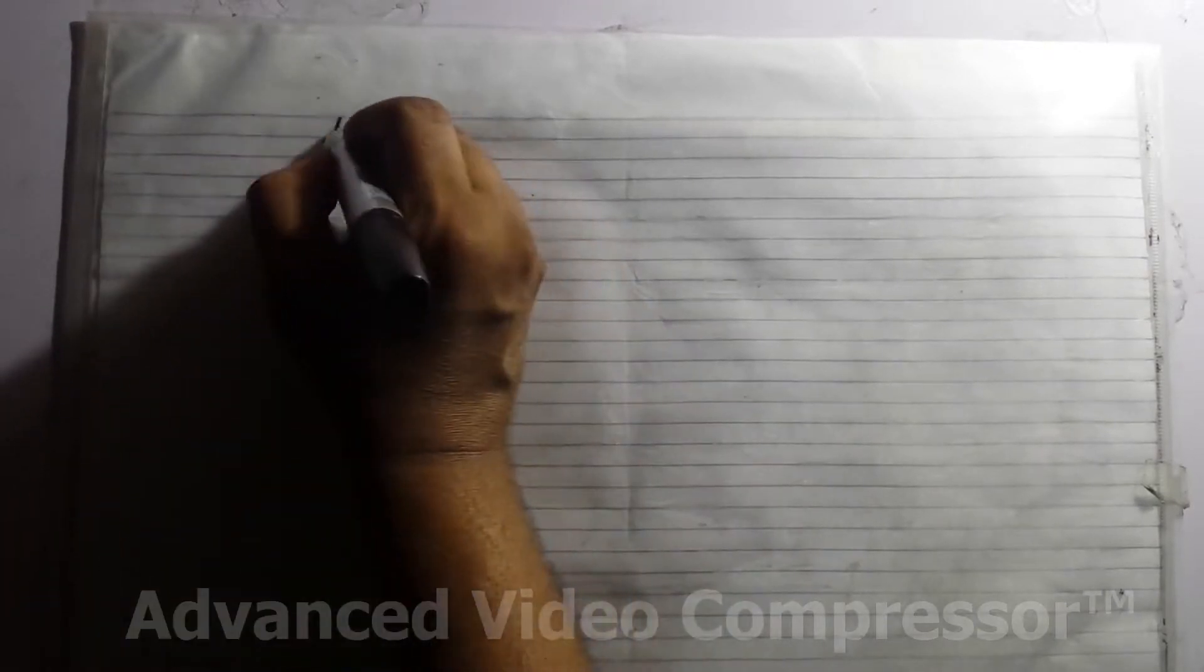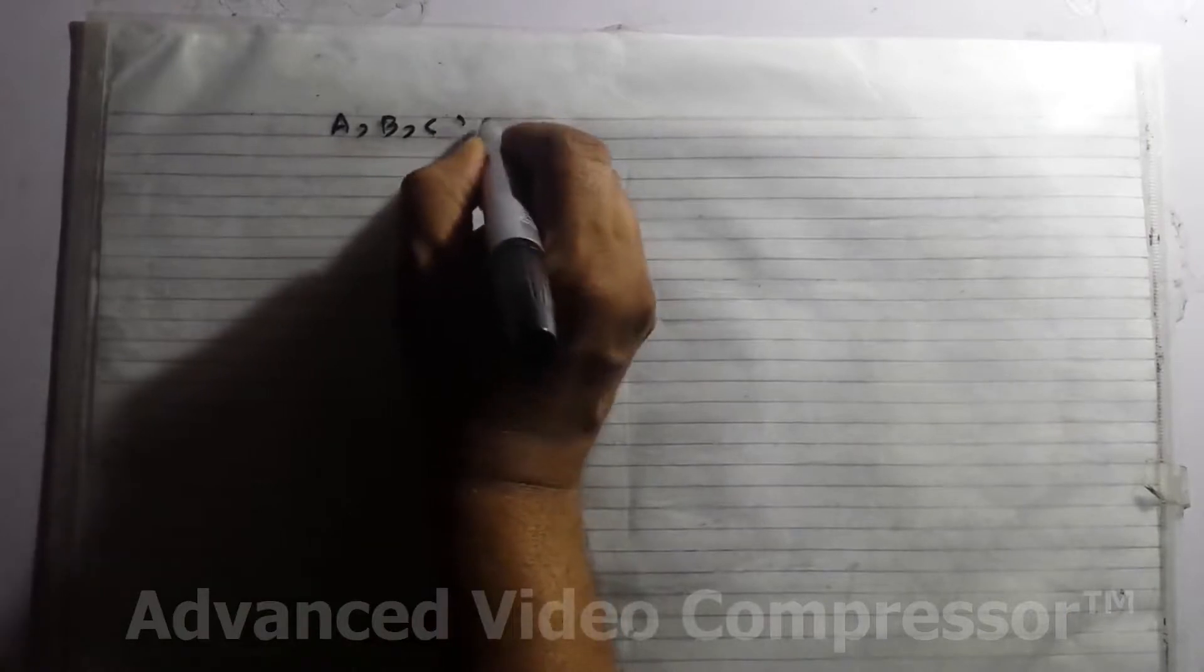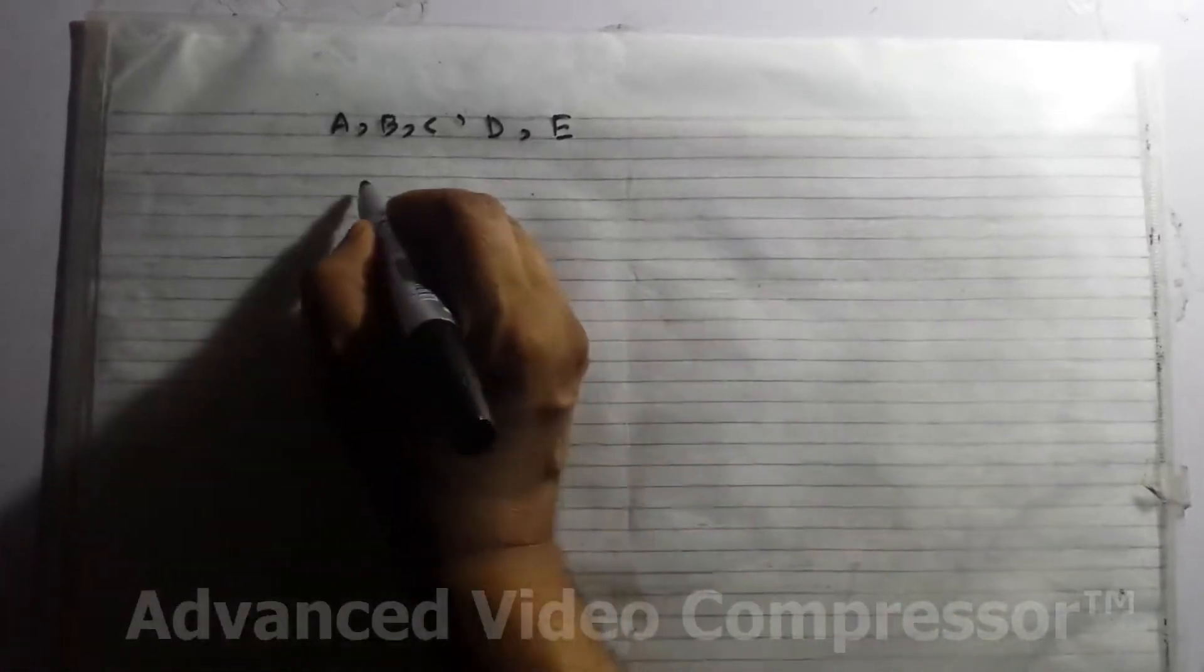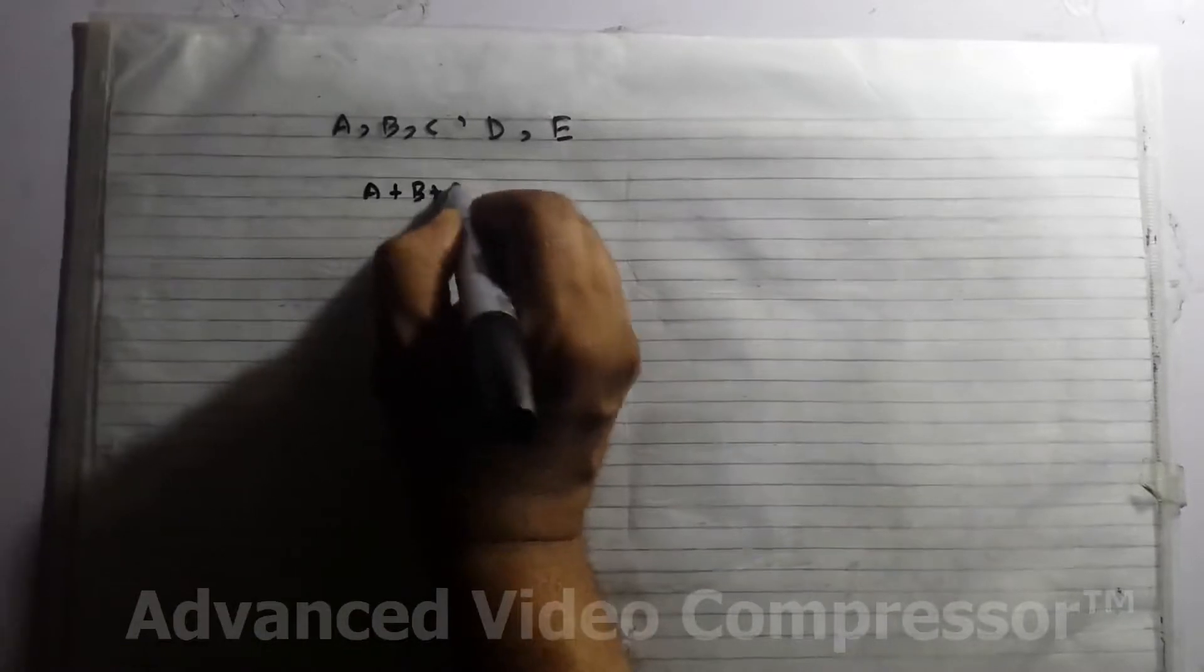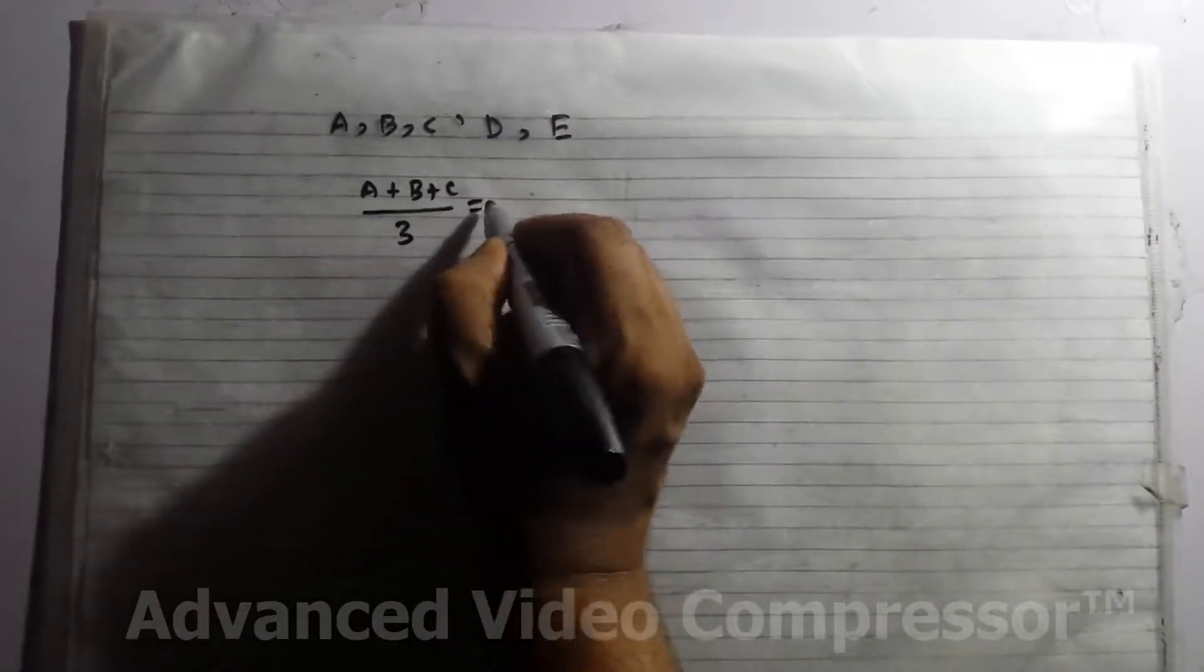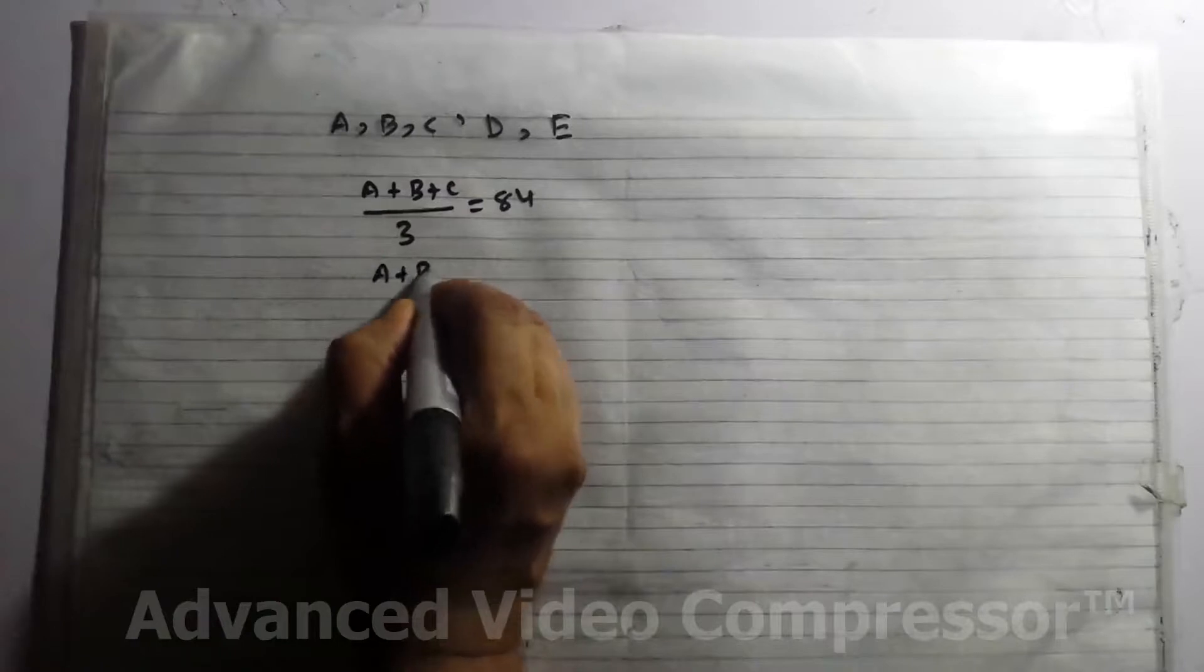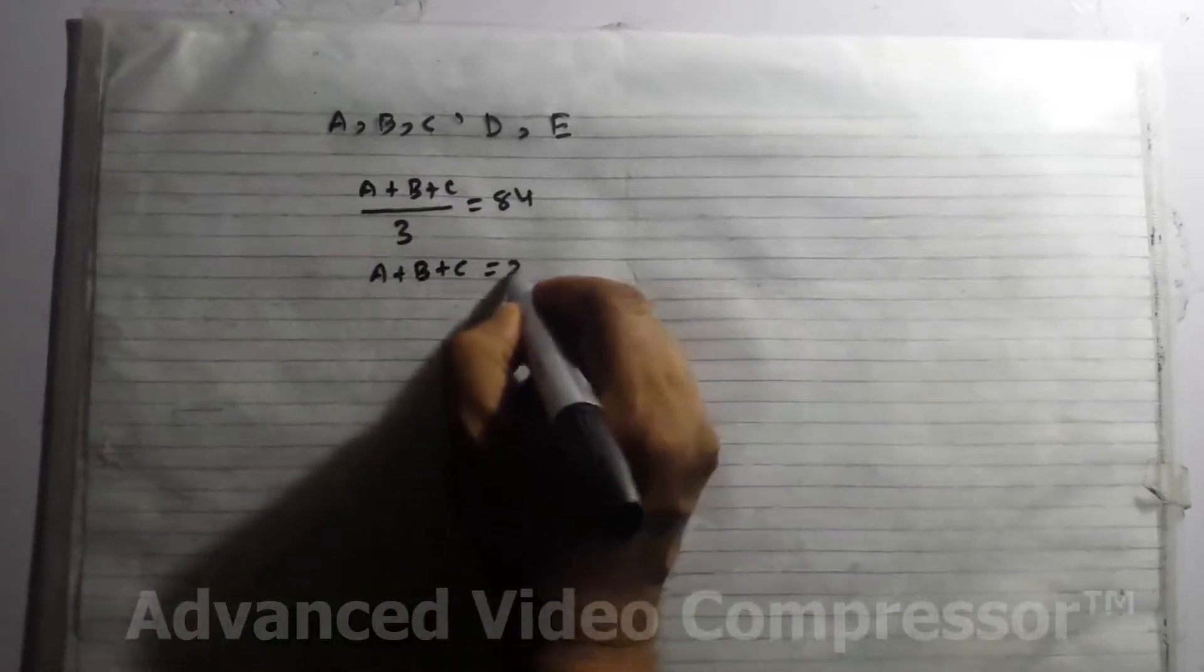Now there are persons A, B, C, D, and E. He's saying that the average weight of A plus B plus C is 84. Now from there we calculate: (A + B + C) / 3 = 84, so A + B + C = 252.